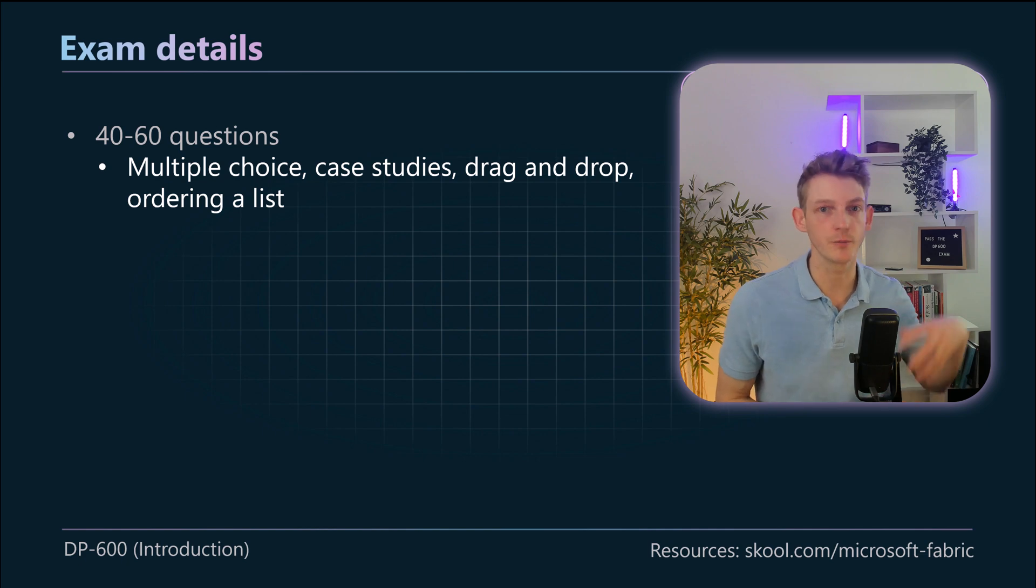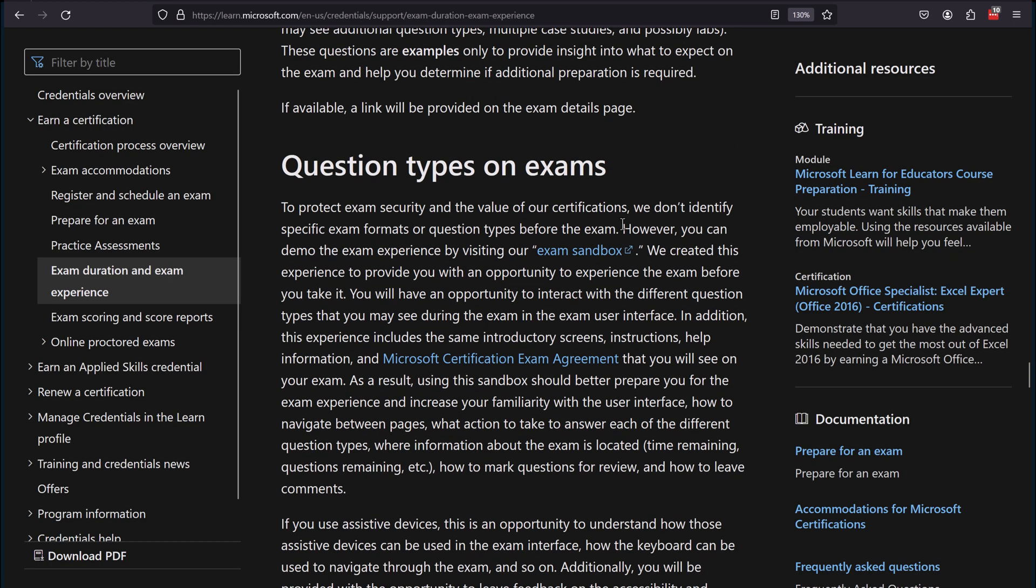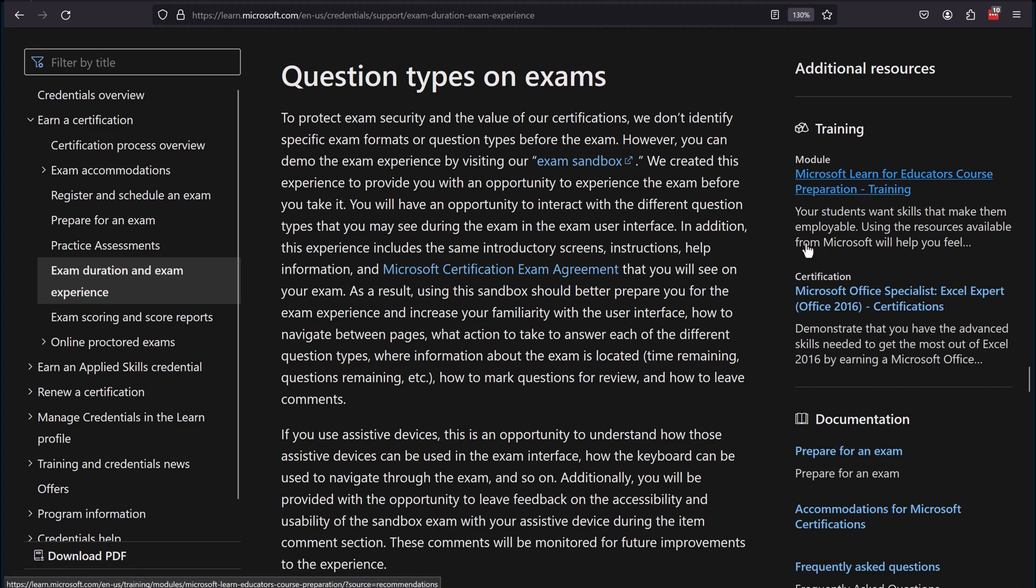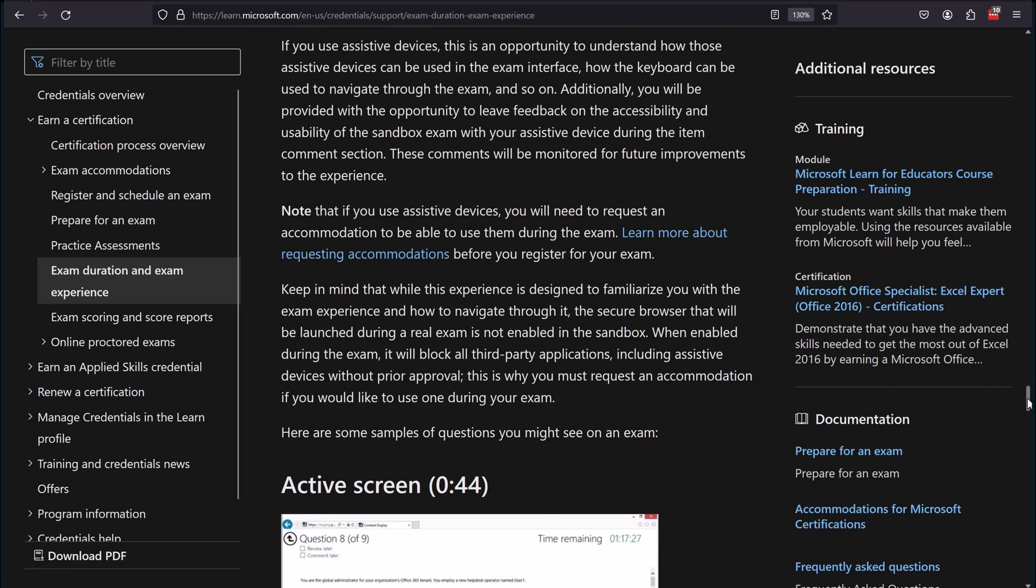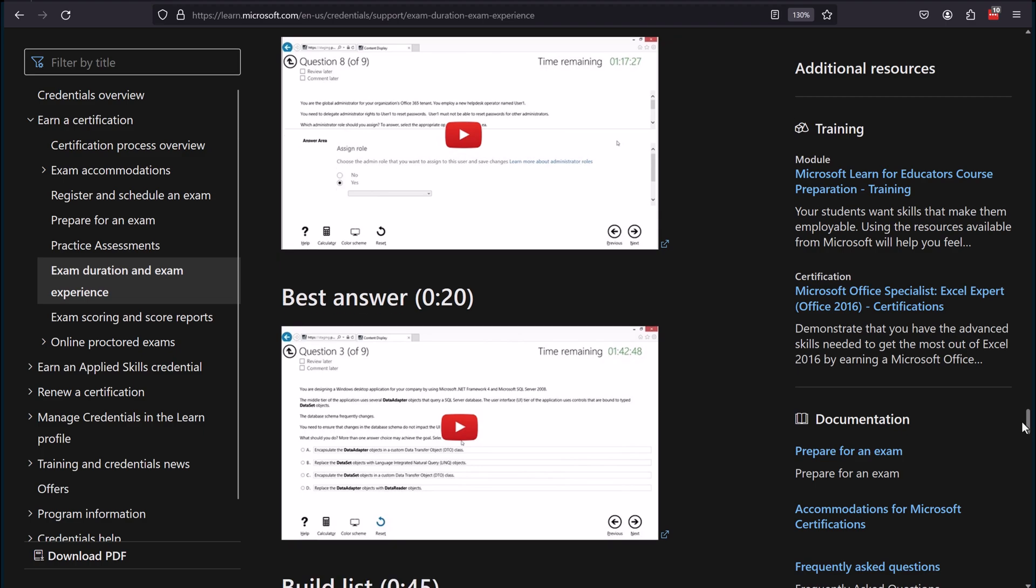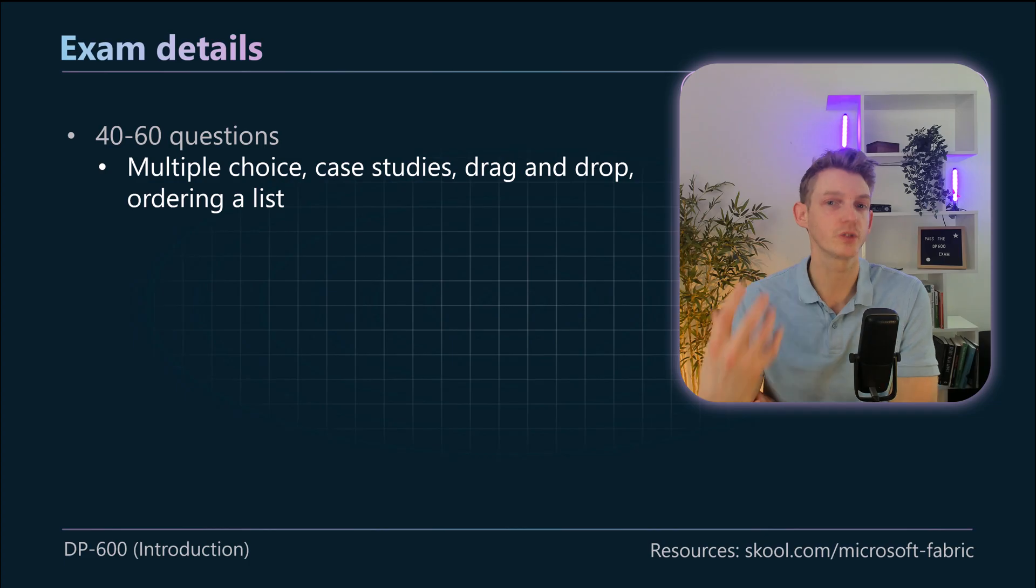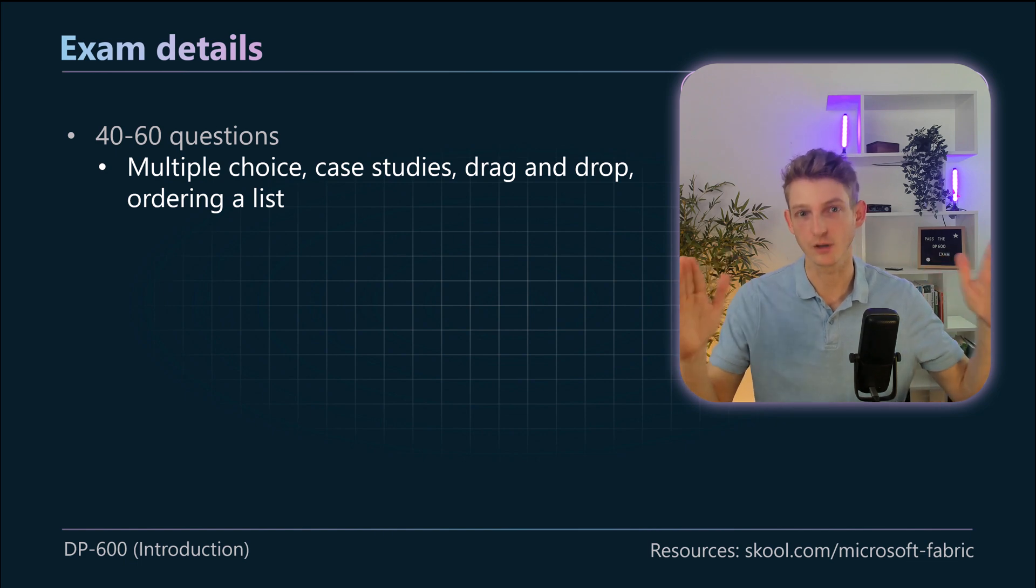And the questions can be of different types. So some of them are multiple choice, some of them might be a case study and the case studies normally take two, three, four questions so you really need to understand what's going on and you get multiple questions about the same case study. You also have things like drag and drop and ordering lists. And for a full list of the question types I recommend you go to this resource here, it's on the Microsoft Learn exam question section and I'll leave a link to that in the description below. And you can also use the exam sandbox that provides you with a sandbox experience of the exact question types that you can expect in the exam.